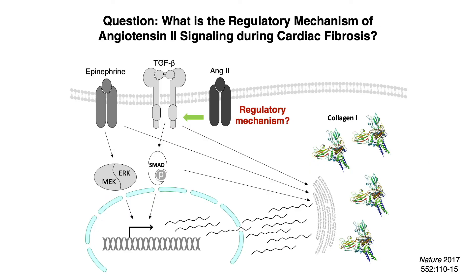During cardiac fibrosis, quiescent cardiac fibroblasts are activated by TGF-β and angiotensin II to become myofibroblasts, with extracellular matrix deposition. The regulatory mechanism of angiotensin II signaling underlying cardiac fibrosis is still unclear.